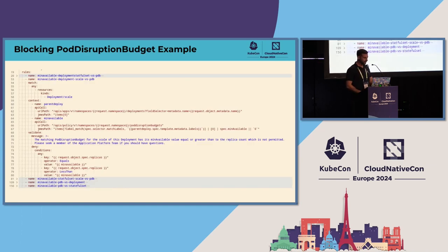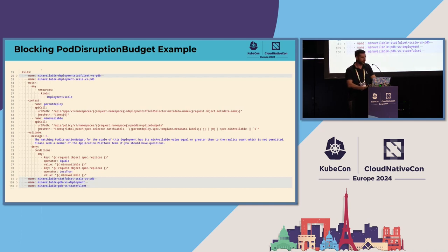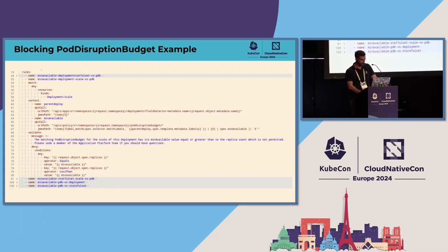Let me show you an example. Here is one of our rules to prevent blocking PodDisruptionBudgets. On line 58, we run this rule whenever a deployment scale command is passed to the cluster — for example, 'kubectl scale deployment'. On line 62, the rule checks if the deployment exists for that scale command. If it exists, we go and check the replica count defined in that deployment.